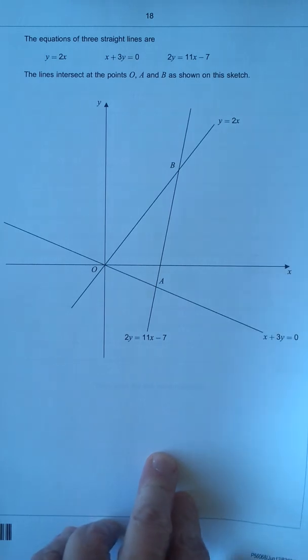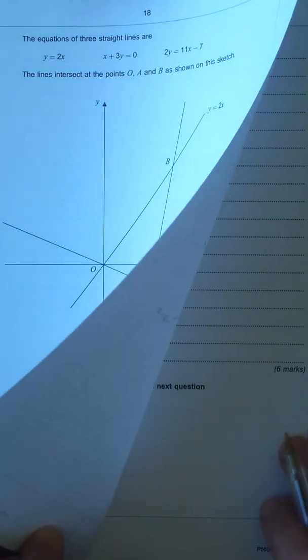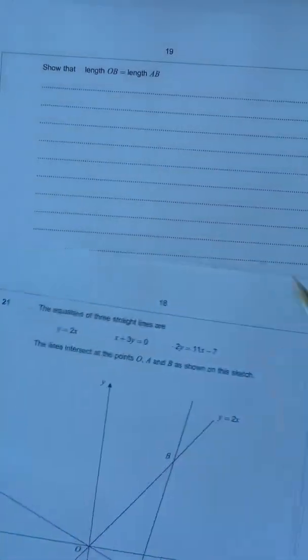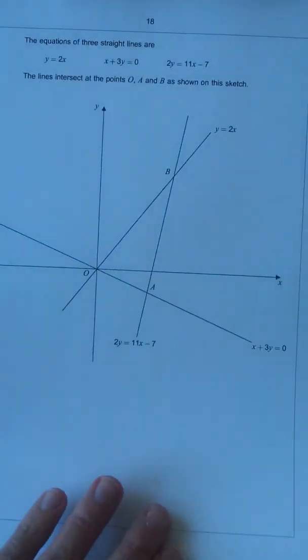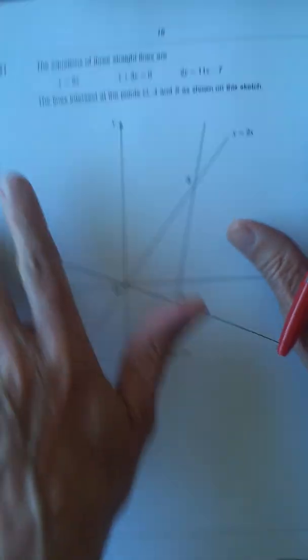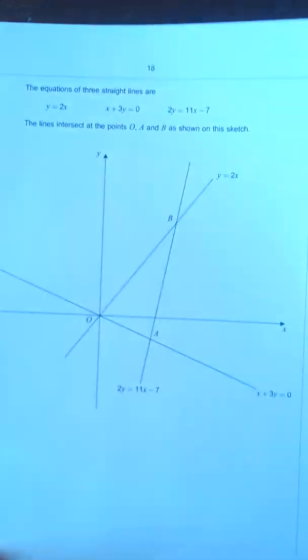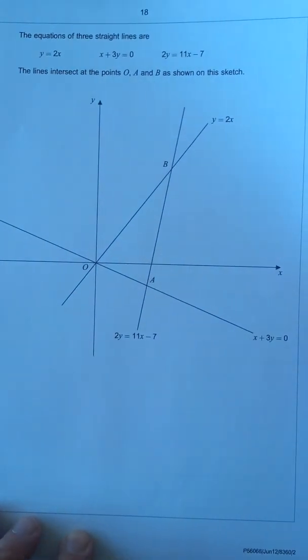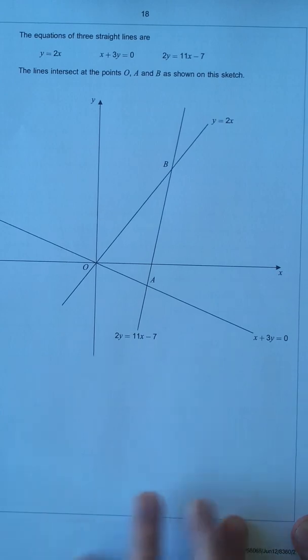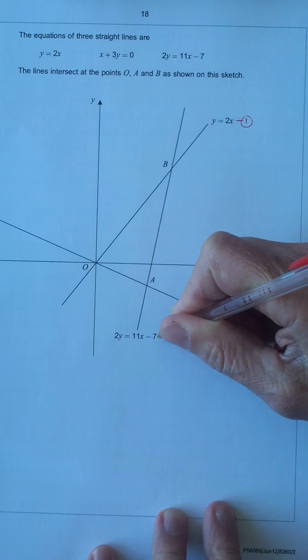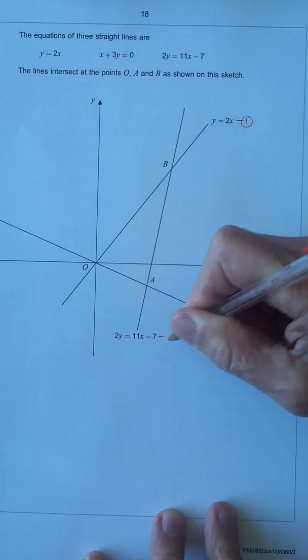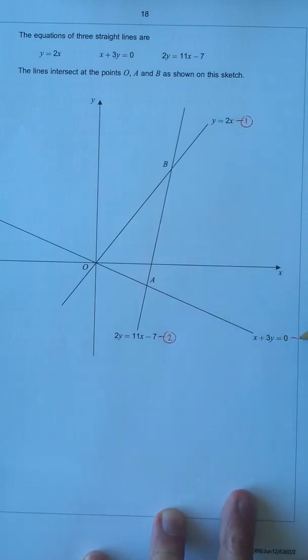Question 21 is about equations of straight lines, and it asks us to show that length OB equals length AB. I'm going to work on this page so you can see what I'm doing. I'm going to label the equations: y equals 2x is equation 1; 2y equals 11x minus 7 is equation 2; and x plus 3y equals 0 is equation 3.